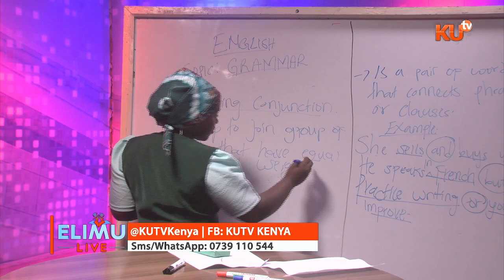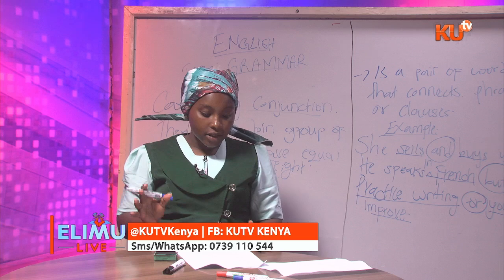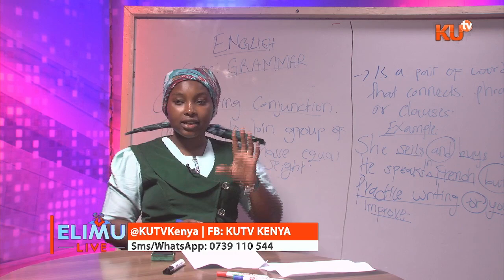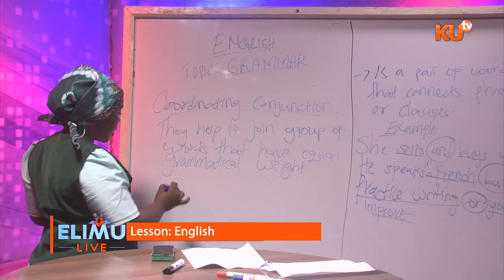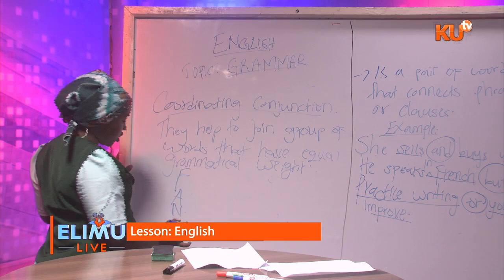These coordinating conjunctions can be remembered using a mnemonic written in a vertical position: FANBOYS. If you want to know the coordinating conjunctions, just write the word FANBOYS in a vertical position.